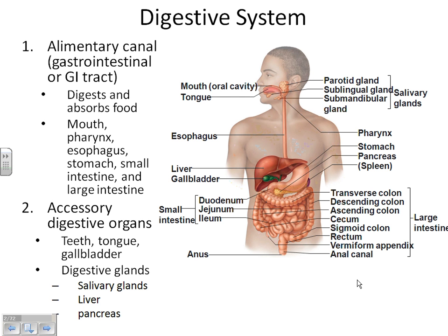Organs of the alimentary canal — your primary organs would be your mouth, down through the pharynx, the esophagus, into the stomach, through all parts of the small intestine, then the large intestine, and finally out the anus. Those are the essential organs. The accessory organs help all of those function to get your food through.